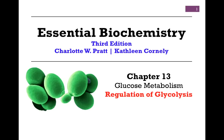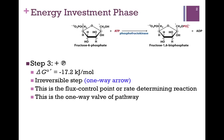In our next lesson on glucose metabolism from Chapter 13, we want to look at the regulation of glycolysis. Regulation of the pathway occurs at Step 3, the step catalyzed by phosphofructokinase.